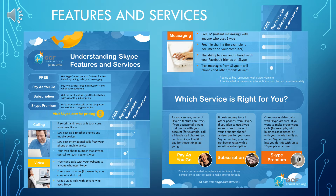With the pay-as-you-go option, you pay extra for features individually as you need them. You get low-cost calls to other phones and mobile devices, low-cost international calls from your phone or mobile device, plus the free video calling, free screen sharing, free IM, free file sharing, the ability to view and interact with your Facebook friends, and text messages from Skype to your cell phone and other mobile devices.